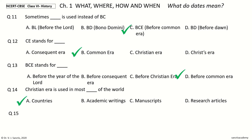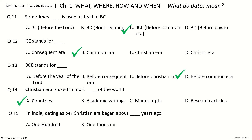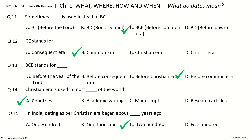Question 15. In India, dating as per Christian era began about dash years ago. Your options: 100, 1000, 200, 500. And the answer is 200 years ago.